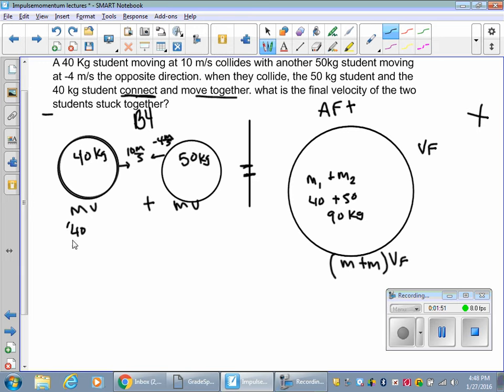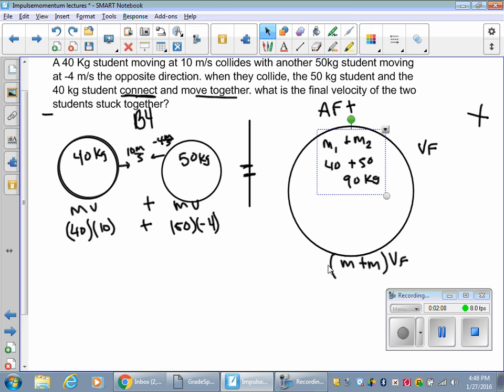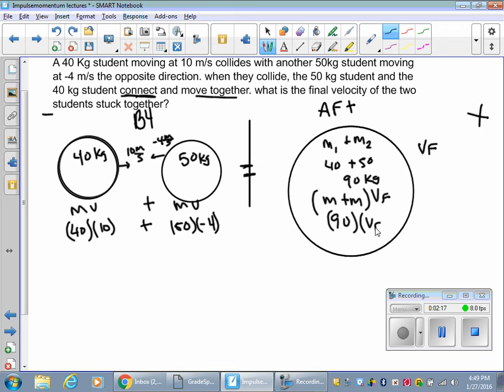All right, so let's see. Let's actually plug them in. Mass is 40. Velocity is 10. Mass is 50. Velocity is negative 4. Over here we have, let me get some of this out the way, so this is 90 with the two masses times my v final, right?